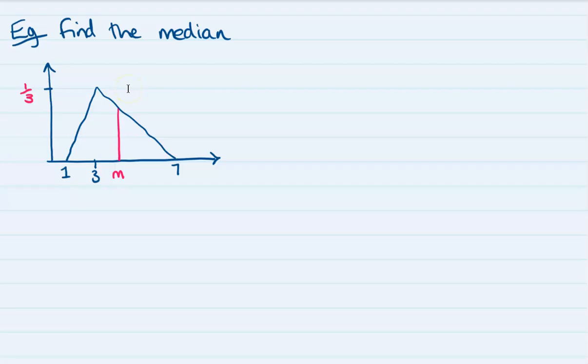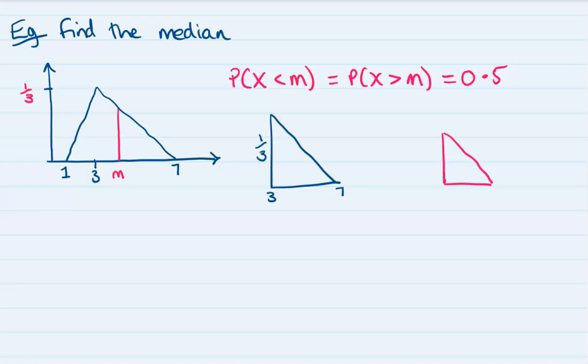We know that the probability that x is less than the median is the same as the probability x is more than the median, which will be equal to 0.5. If we think about the similar triangles, we've got the big triangle from 3 to 7, so that'll have a base of 4. The little triangle's base we do know in terms of m, so that will be 7 minus m.